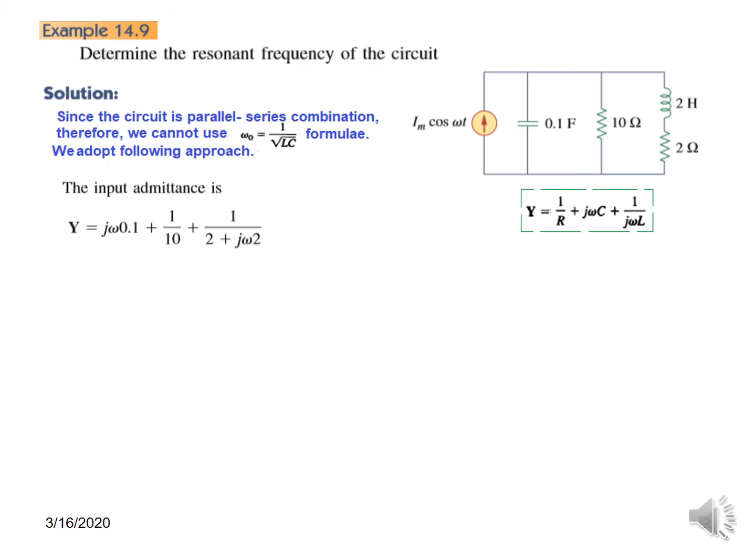So it becomes 2 plus jω2 instead of jωL. From here we can simplify this. We want to get rid of this j, so multiply numerator and denominator by 2 minus jω2.